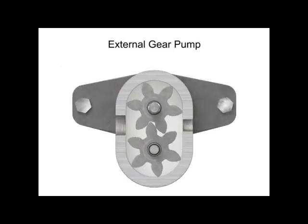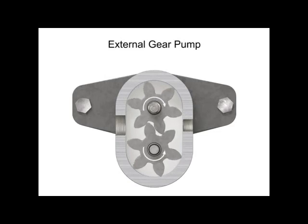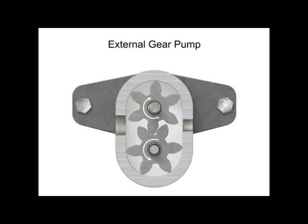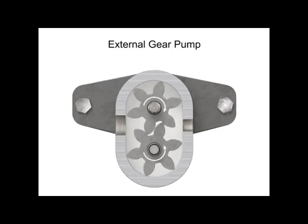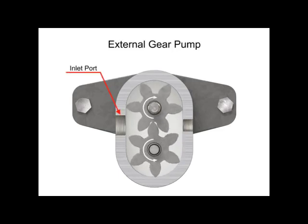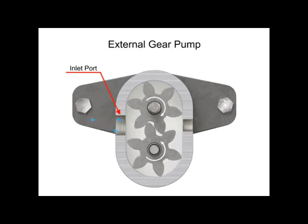As the gears rotate away from each other and come out of mesh, they create an expanding volume on the inlet side of the pump. This creates a vacuum at the inlet port, allowing fluid to flow into the pump.